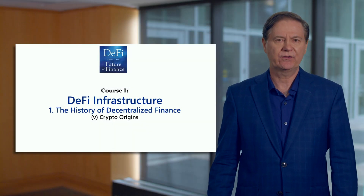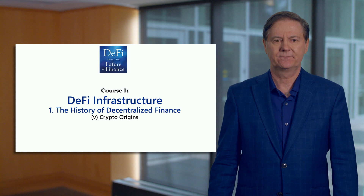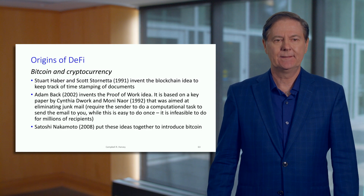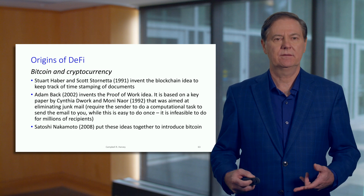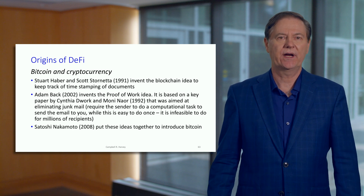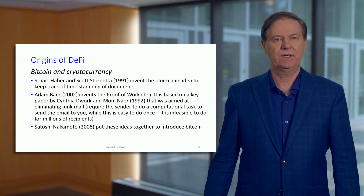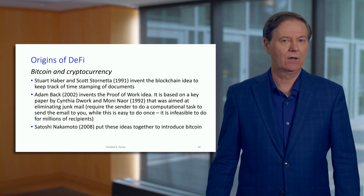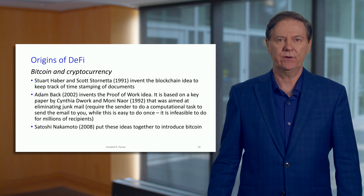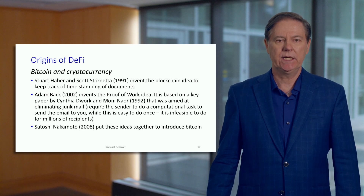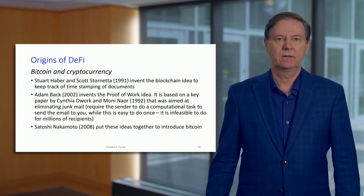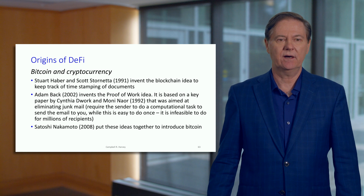Let me talk about the origins of crypto. The key innovation was this idea of blockchain technology, and that innovation actually happened well before Bitcoin was introduced. Haber and Stornetta published a paper in the Journal of Cryptology in 1991, outlining the idea of blockchain.